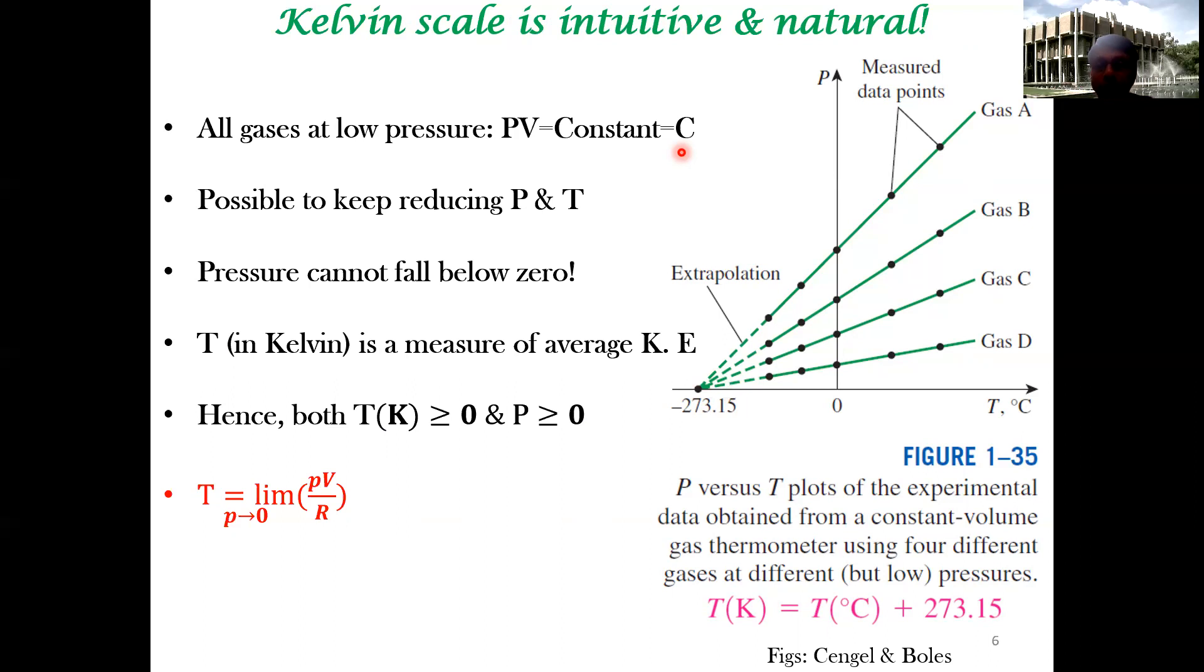The temperature in Kelvin is a measure of average kinetic energy. Kinetic energy is a positive quantity, so it can at the most be zero but it can never be a negative quantity. Essentially both temperature and pressure has to be greater than zero.